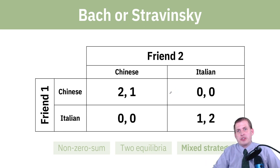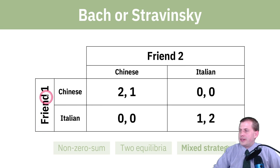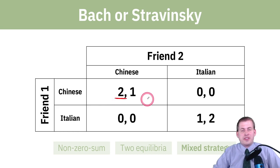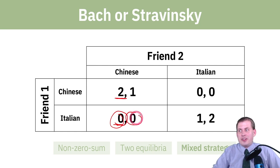They can't coordinate with each other — both their cell phones have died or something — so they have to figure out where they're going to meet their friend for lunch. If friend one eats Chinese food, they get two happiness points — that's their favorite food. If they eat Italian food by themselves because the other person went to the Chinese restaurant, they get zero happiness points, because they don't like Italian food that much and they're not with their friend.